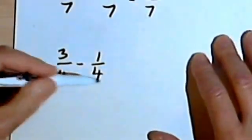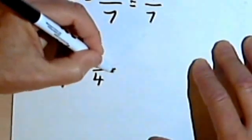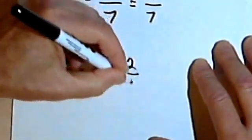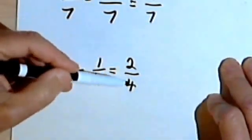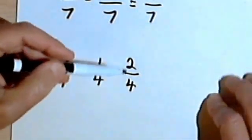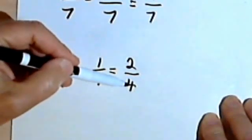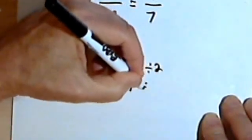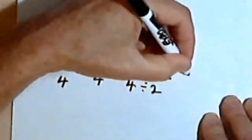One more where the denominators are the same: I've got 3 quarters minus 1 quarter. 3 minus 1 is 2, so I've got 2 over 4. The thing to remember is to look at your answer and see if you can reduce it. I can divide both the 2 and the 4 by 2, and that's going to give me 1 half.